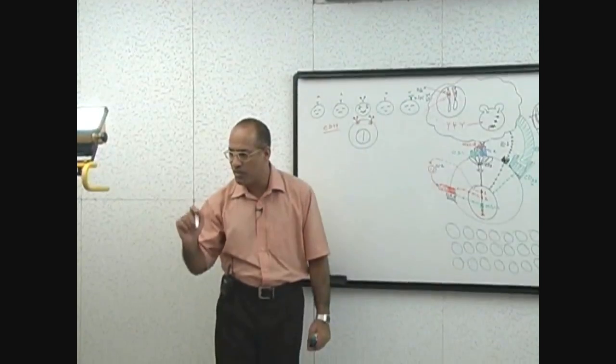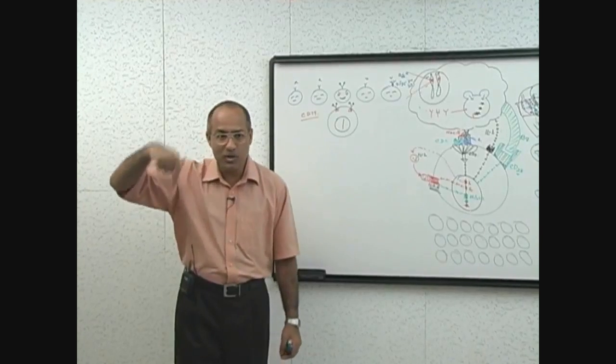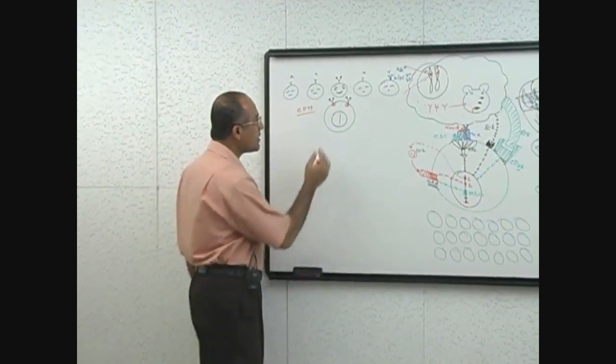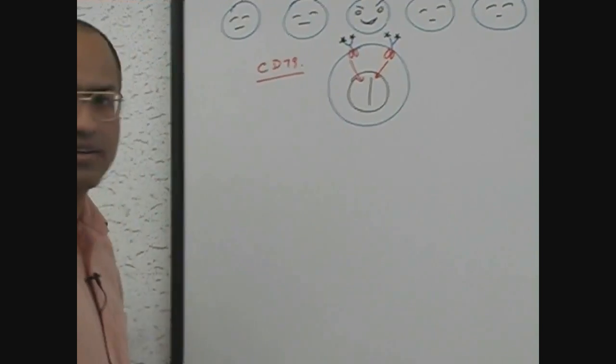So we say surface immunoglobulins, once they are loaded with the appropriate antigen, these immunoglobulins move their tails and they activate CD79 and they give signal to the nucleus.